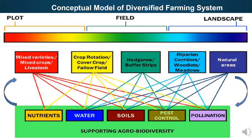These farming practices promote critical ecosystem services such as nutrient and water cycling, soil formation, pest and disease control and pollination, as designated by the lines joining each farming practice to each service. Across temporal scales, these farming practices plus the natural successional process enhance agro-biodiversity and ecosystem services dynamically.